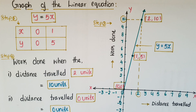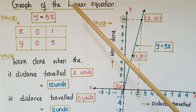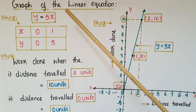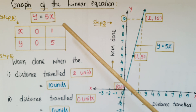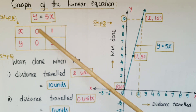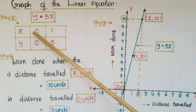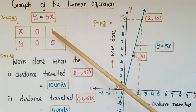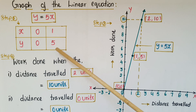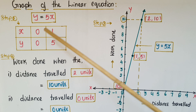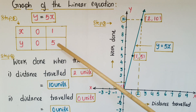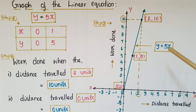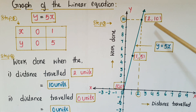The next step is to draw the graph of the linear equation. To draw the graph of a linear equation we need a minimum of two solutions. If x equals zero then y equals zero; if x equals one then y equals five. So the solutions are (0, 0) and (1, 5).